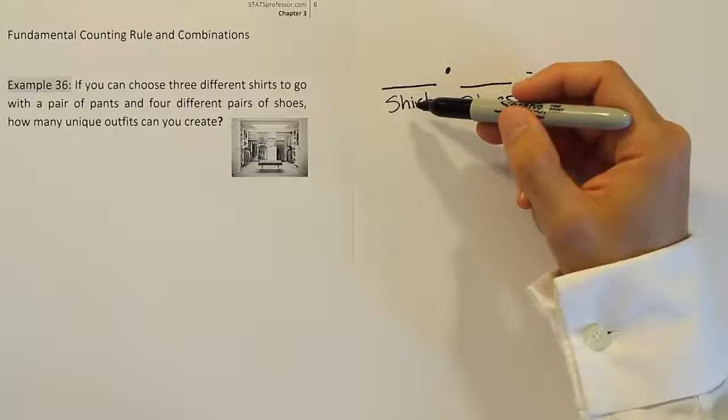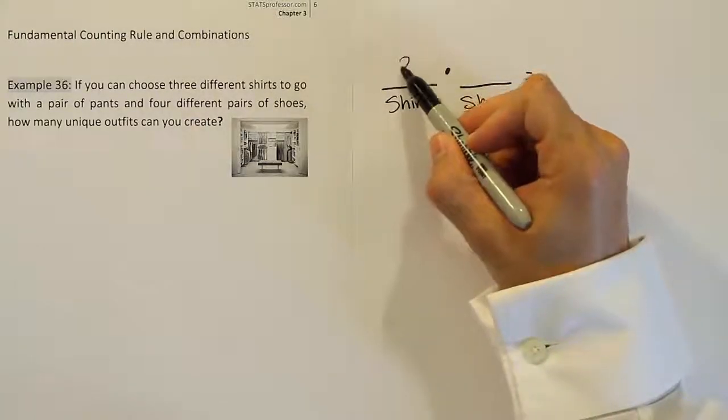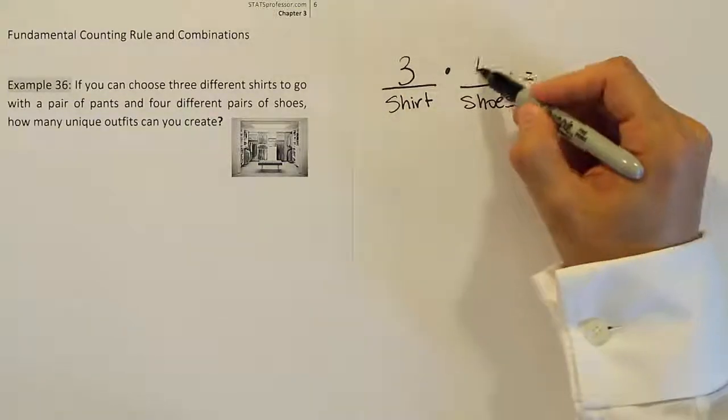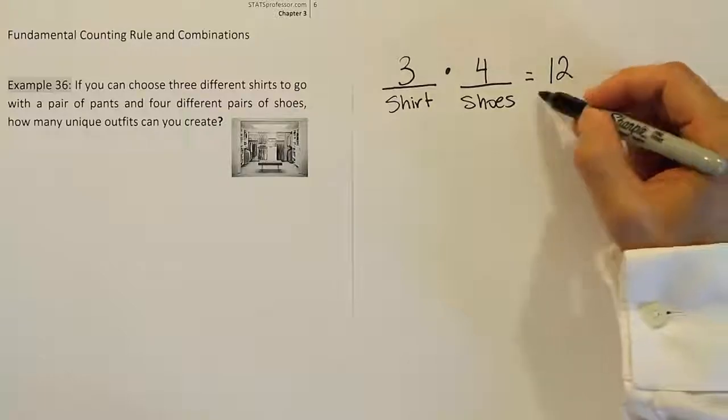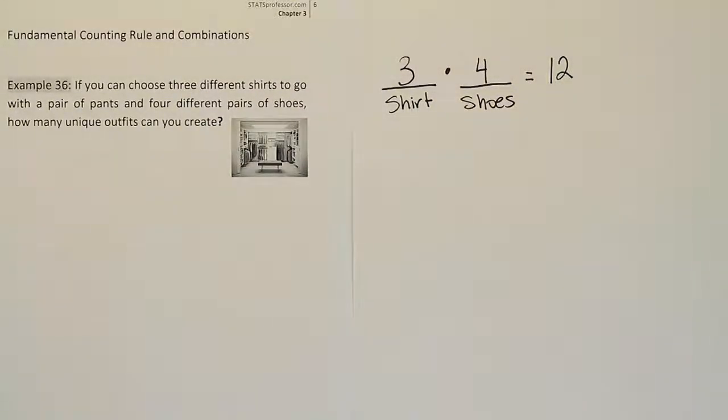So let's talk about the shirts. How many shirts are there? Well, in the problem it says there are three different shirts. So you would put a three here, and for the shoes, it says there are four different pairs of shoes, and this produces 12 unique outfits. And that's it. That's all you have to do to solve the problem.